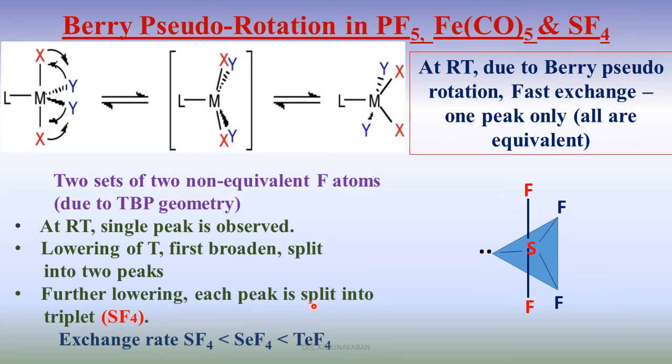Further on lowering temperature, each peak is split into triplet. For example, the axial fluorines are split into triplet because of coupling with the equatorial fluorine atoms. Each peak is split into triplet.